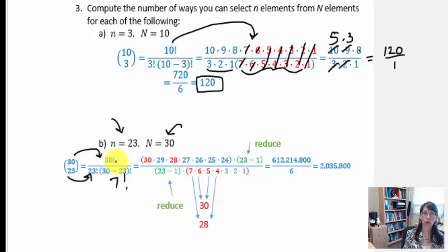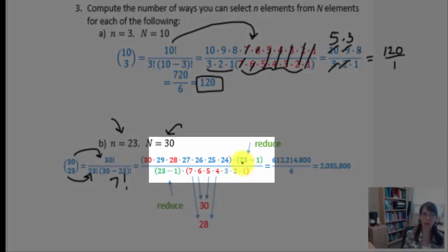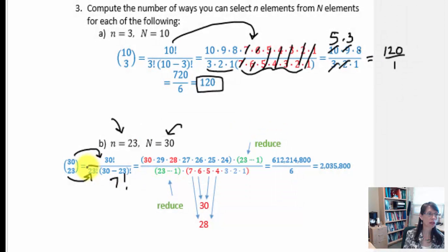So I'm taking 30 factorial in the numerator and I'm starting to write the factors. Notice I said starting to. I never completed it because I'm noticing by the time I get to times 23, don't I have that same value in the denominator? Because 23 factorial is our first term.